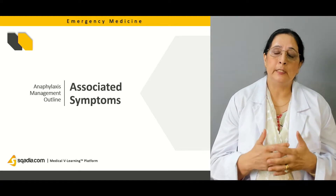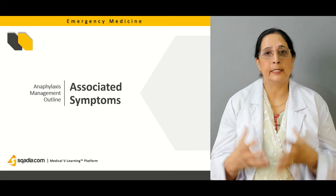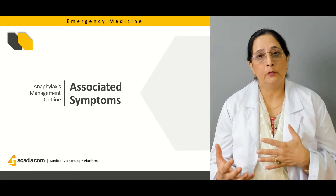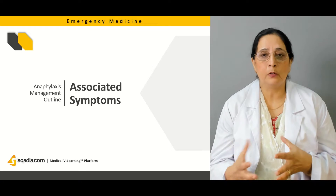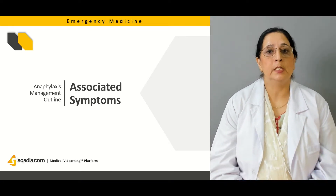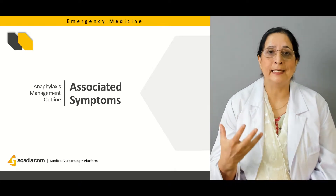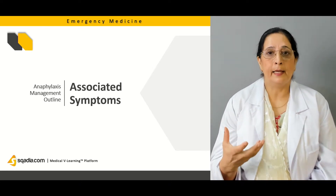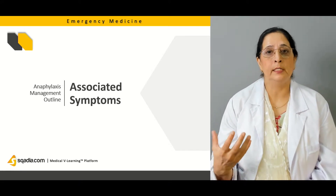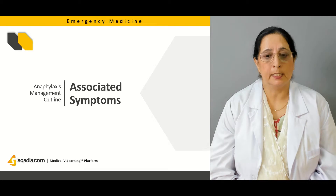We will talk about the characteristics of angioedema. Then we will talk about bronchospasm, which is also another associated symptom. Then we will talk about findings in the head and neck and in the heart — all these will be covered under the associated symptoms section.